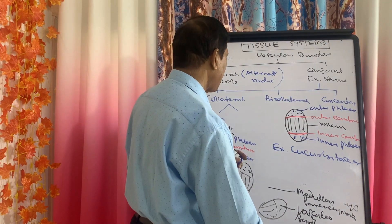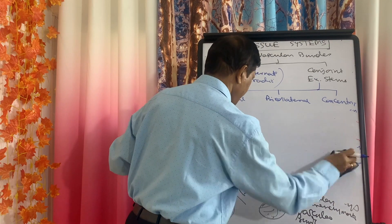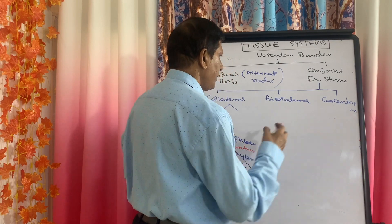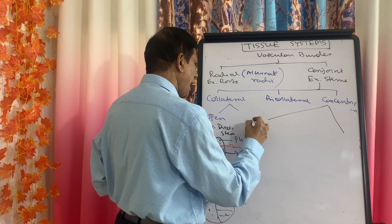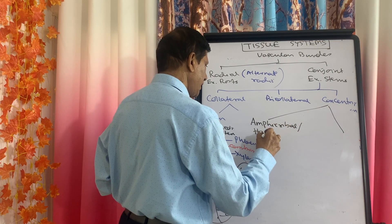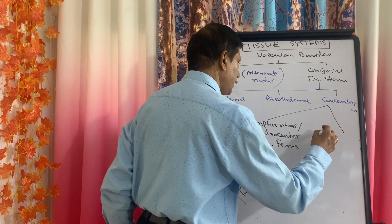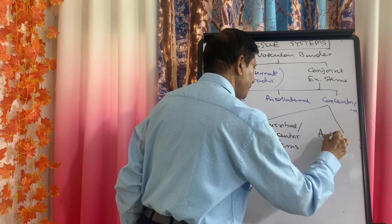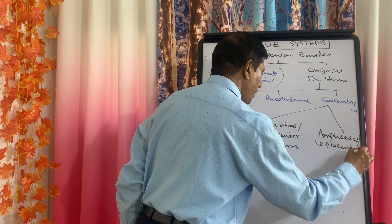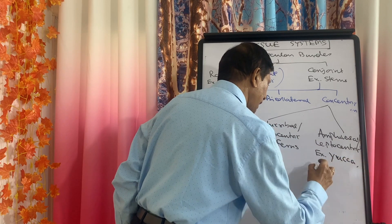The third type is concentric, which is again of two types: it may be amphicribal or hydrocentric, with the common example being ferns; or amphivasal or leptocentric, with common examples being Yucca and Dracaena.